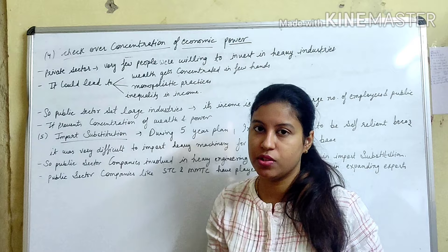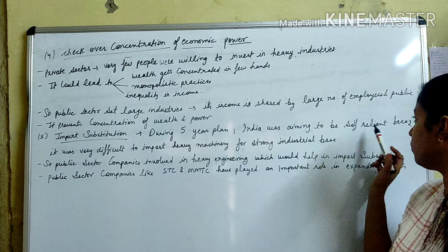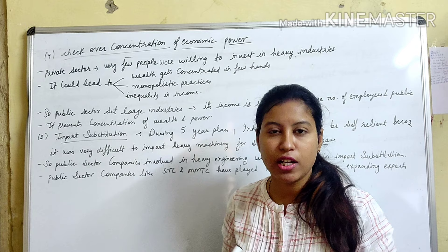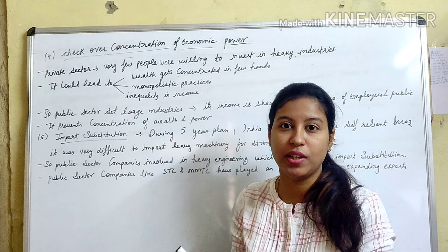The fifth and last point is import substitution. During the five-year plans, India was aiming to be self-reliant, meaning production should happen within the country.